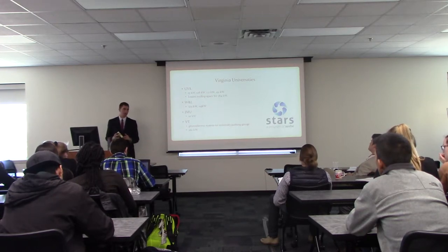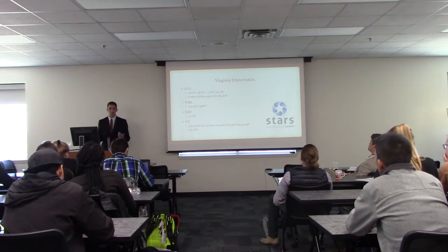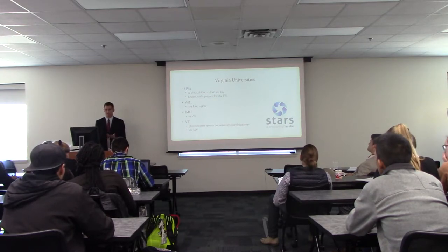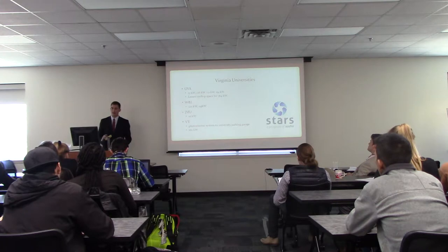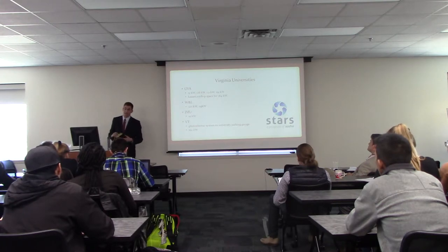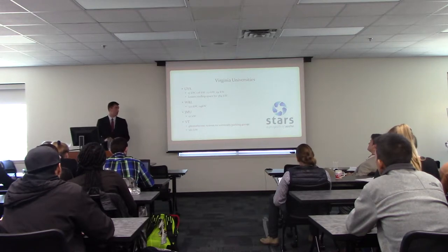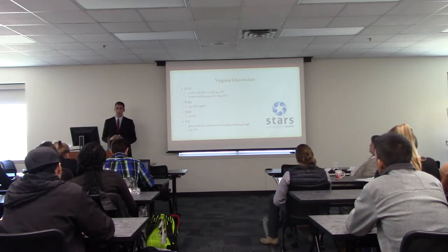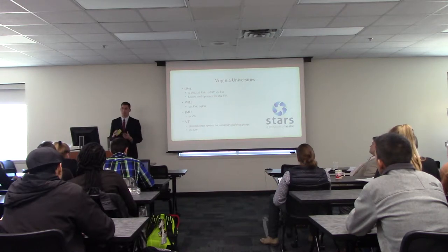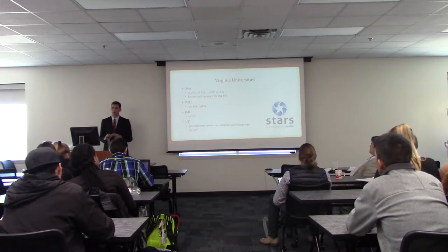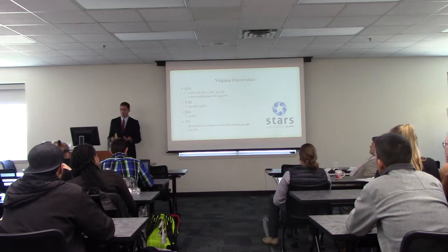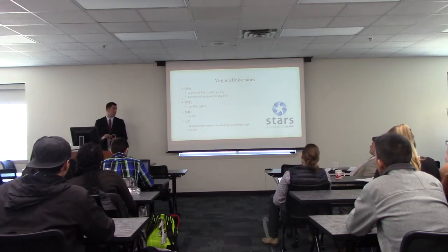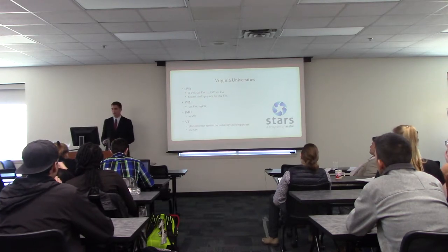The local universities I looked at are UVA, Washington and Lee, JMU, and Virginia Tech. UVA has added a lot of solar and leases a 364-kilowatt system on top of one of their libraries. Washington and Lee has two systems and is about to add a third to hopefully power all the upperclassmen dorms. JMU only has a 10-kilowatt system, but we use it as a teaching tool — it also gives us energy. Virginia Tech recently put a 102-kilowatt system on top of their parking garage.